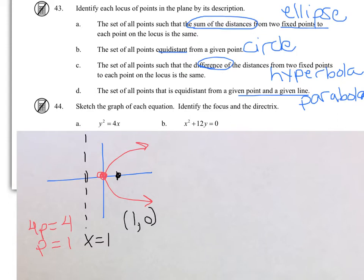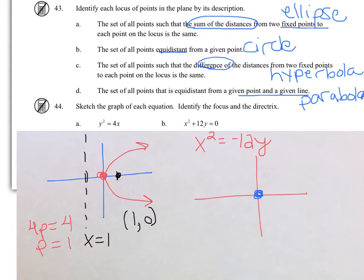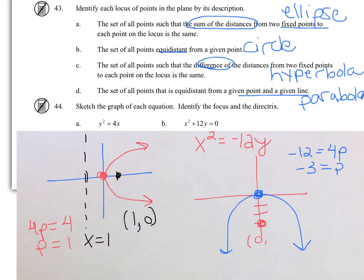For B, I have to isolate the squared term: X squared equals negative 12Y. Again, the vertex is at the origin. Because it's an X squared graph with a negative 4P value, the graph opens down. Negative 12 equals 4P, so P equals negative 3, meaning 3 units inside the parabola is the focus. Three units up is the directrix, which is the line Y equals 3.